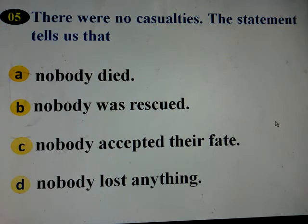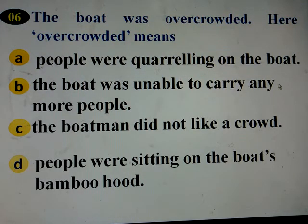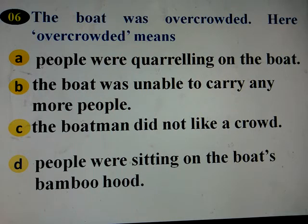Question number five: 'There were no casualties' — this statement tells us that (a) nobody died, (b) nobody was rescued, (c) nobody accepted their fate, (d) nobody lost anything. The answer is: nobody died. Question number six, the last MCQ: The boat was overcrowded — here 'overcrowded' means (a) the people were quarreling on the boat, (b) the boat was unable to carry any more people, (c) the boat did not like a crowd, (d) people were sitting on bamboo. The answer is: the boat was unable to carry any more people.